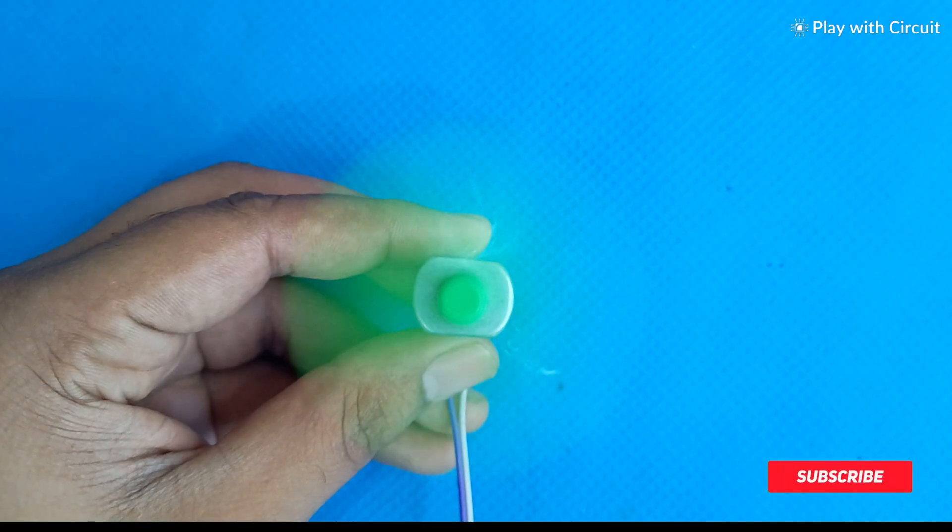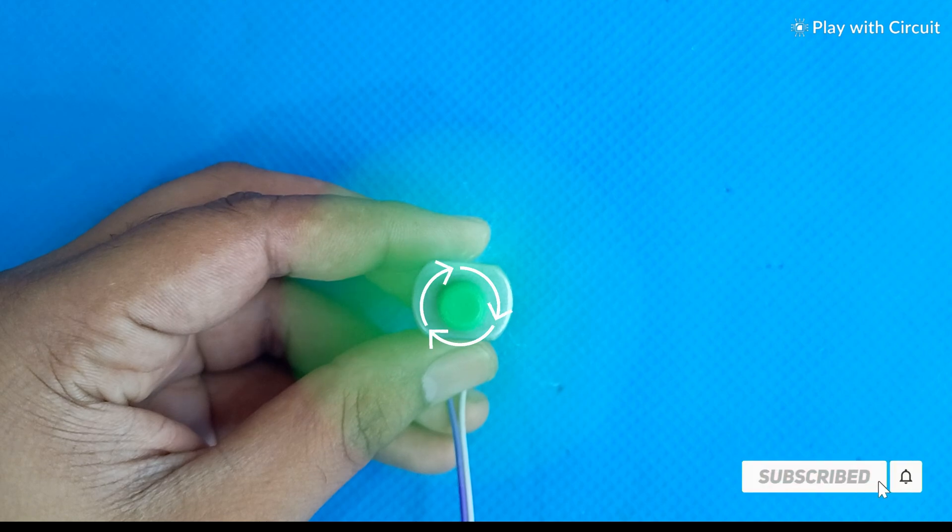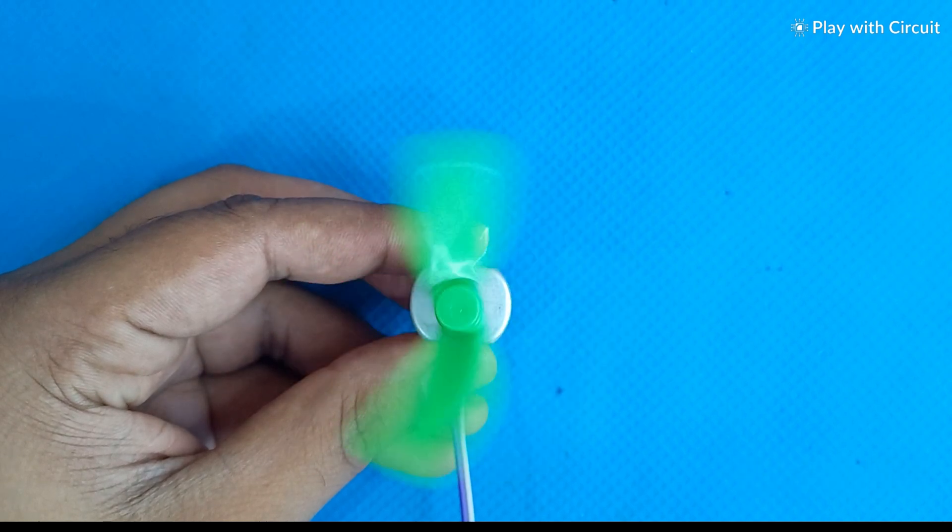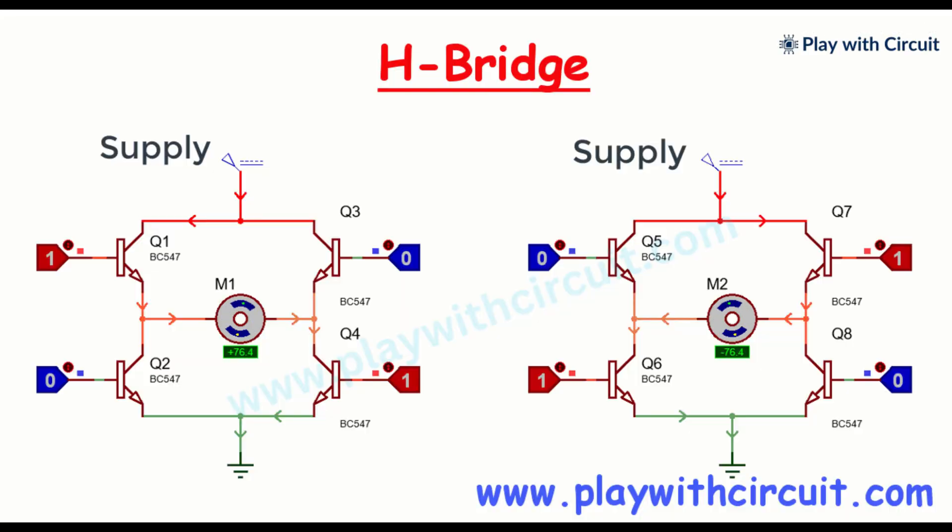To control the direction of rotation of a motor we need to reverse the polarity of the voltage applied to the motor. This can be done using an H bridge circuit configuration.